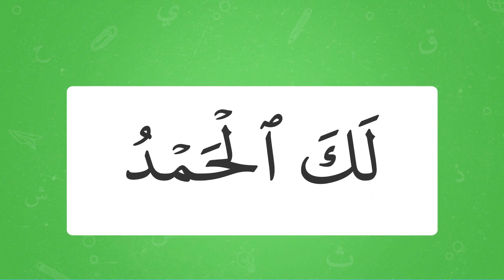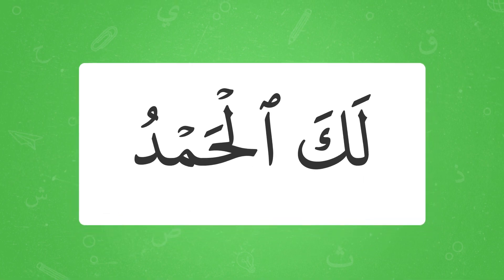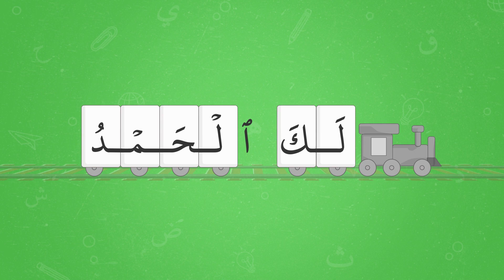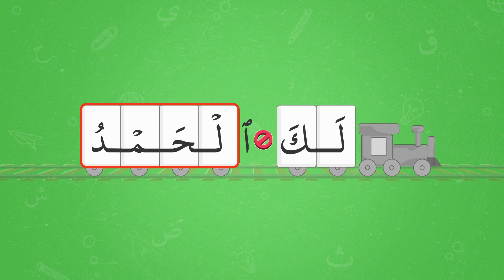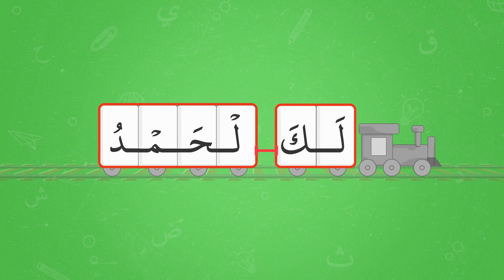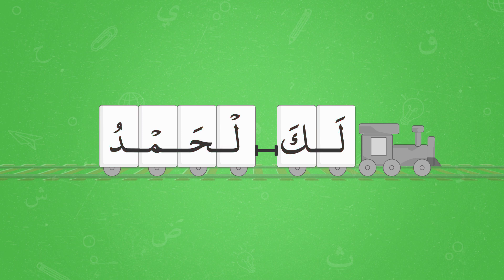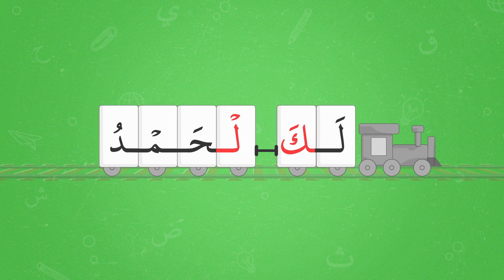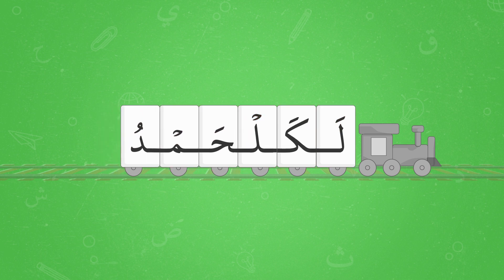Let's see an example. There are two word trains in this verse. The first word train has an engine, but the second one doesn't. So we need to connect the second word train to the first one and read it as one word. Even though Kind Swand and Lazy Goose are in two different words, they get connected and read as one syllable.